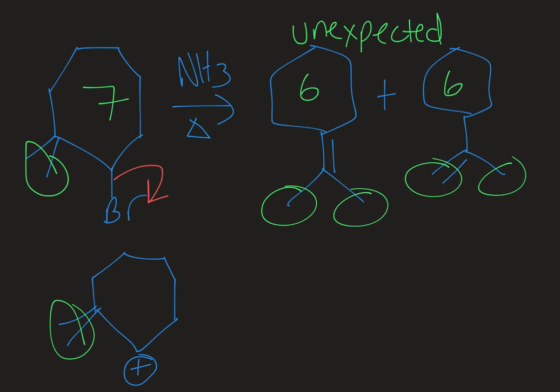I'm going to number for us just so that we can keep track of where everything goes. I'm going to start where the carbocation is and number around the ring. I have a seven-membered ring so I've just numbered to seven. Carbon seven has those methyl groups on it.